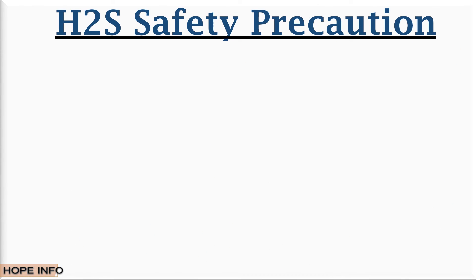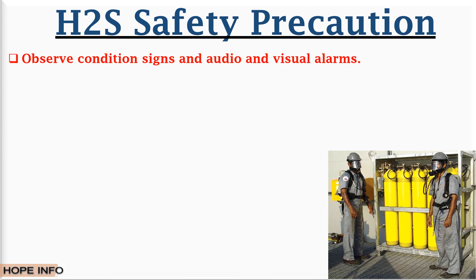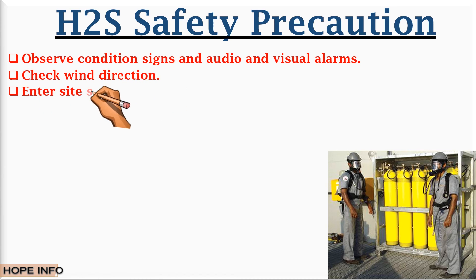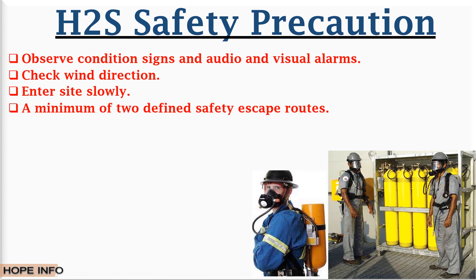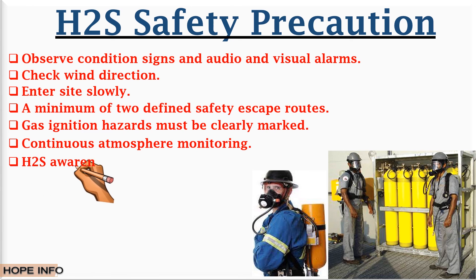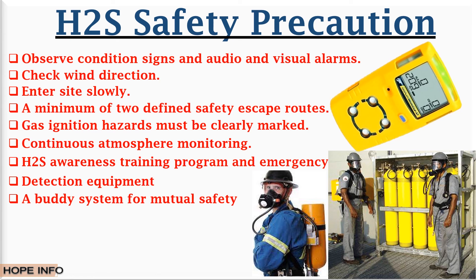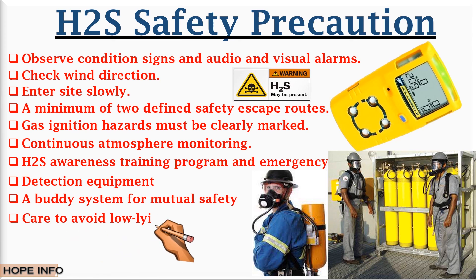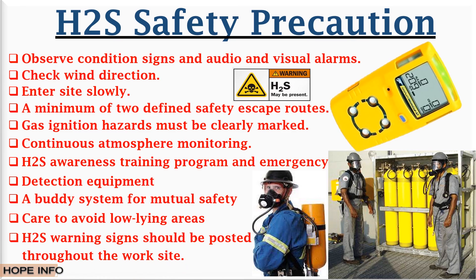H2S safety precautions — every work site should have various safety measures in place. These include: observing condition signs and audio/visual alarms; checking wind direction; entering the site slowly; maintaining a minimum of two designated safety escape routes; clearly marking gas ignition hazards; continuous atmosphere monitoring; H2S awareness training programs and emergency procedures; detection equipment; a buddy system for mutual safety; care to avoid low-lying areas; and posting H2S warning signs throughout the work site.